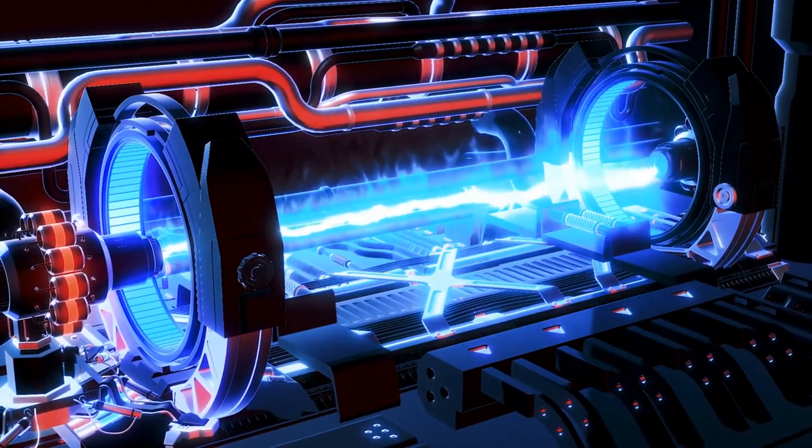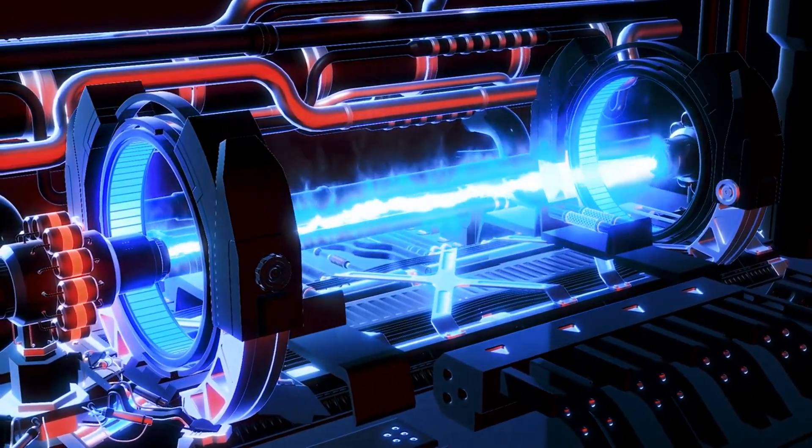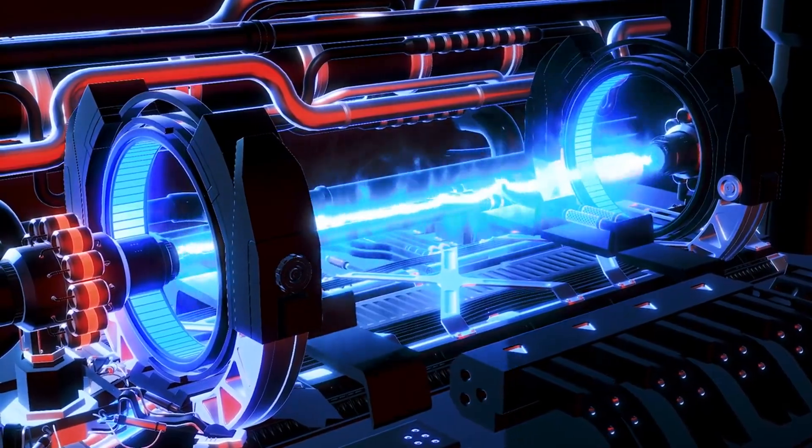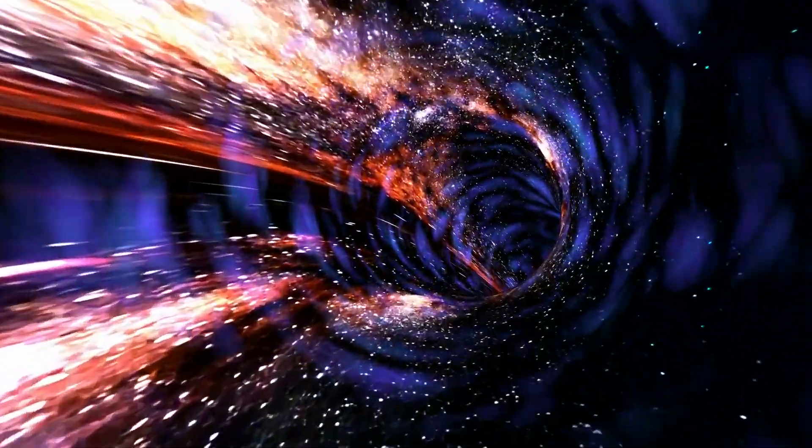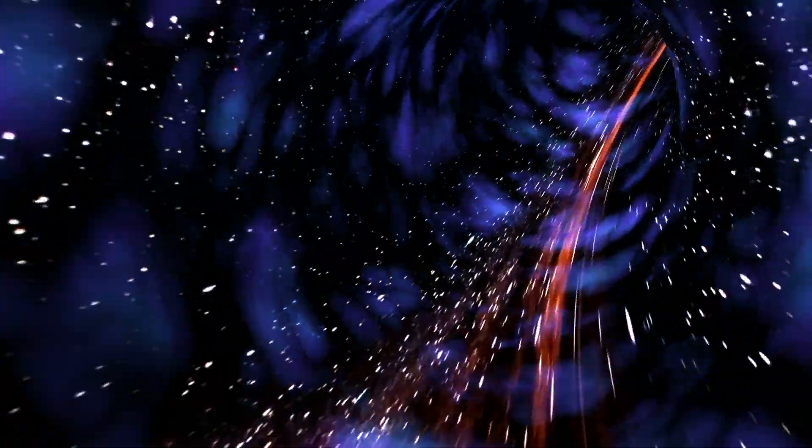The Helical Engine works by continuously altering mass within a vacuum, generating thrust based on special relativity principles. It requires a massive structure over 200 meters in length and a power supply equivalent to running a small city. Space's frictionless environment is key to its effectiveness.